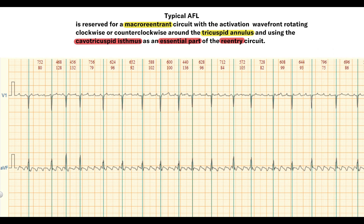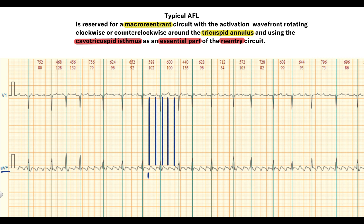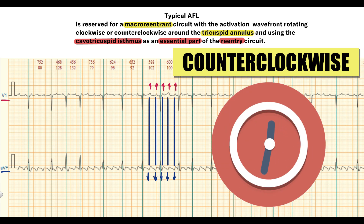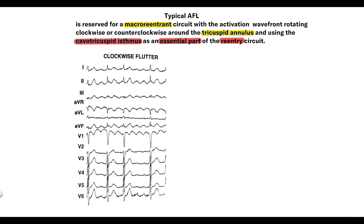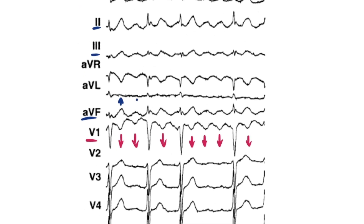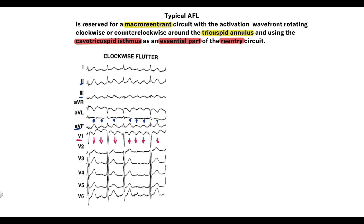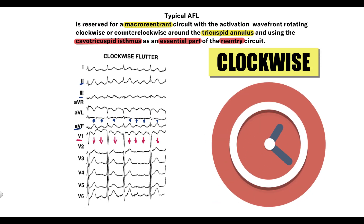If the sawtooth waves are oriented downward in inferior leads (II, III, AVF) and upward in V1, the atrial flutter impulse moves around the tricuspid annulus in the counterclockwise direction. If we see the opposite — negative sawtooth waves in V1 and positive ones in inferior leads — the atrial flutter impulse moves in the clockwise direction.